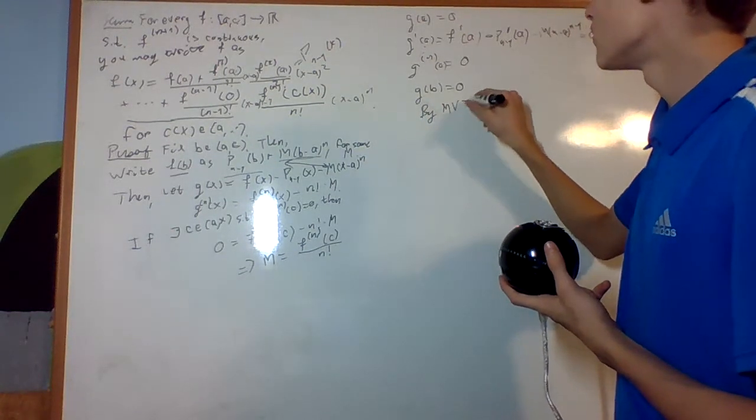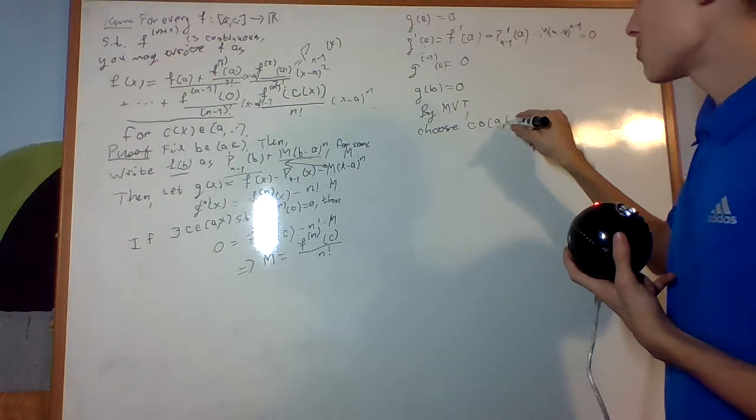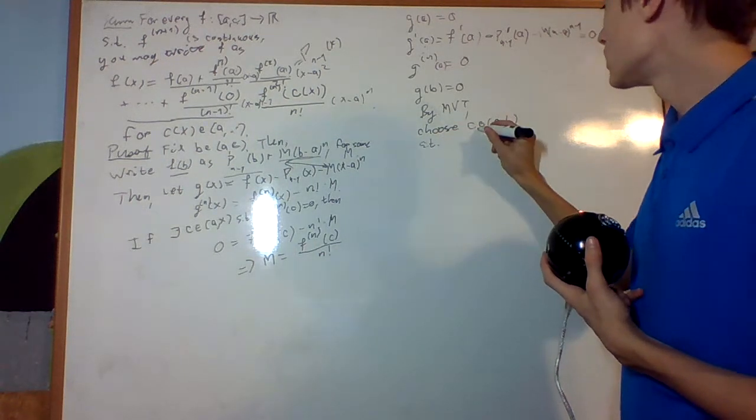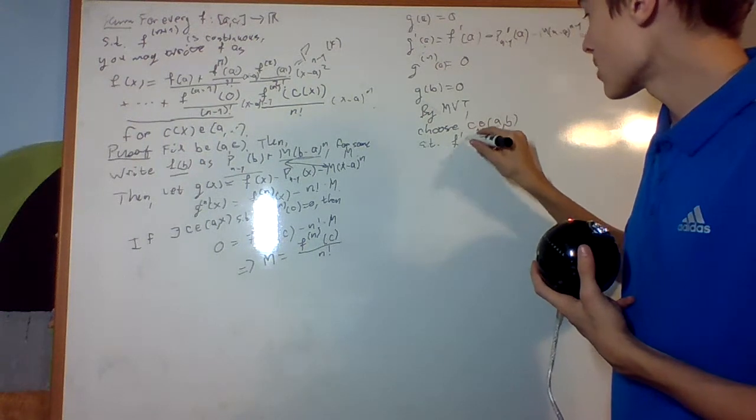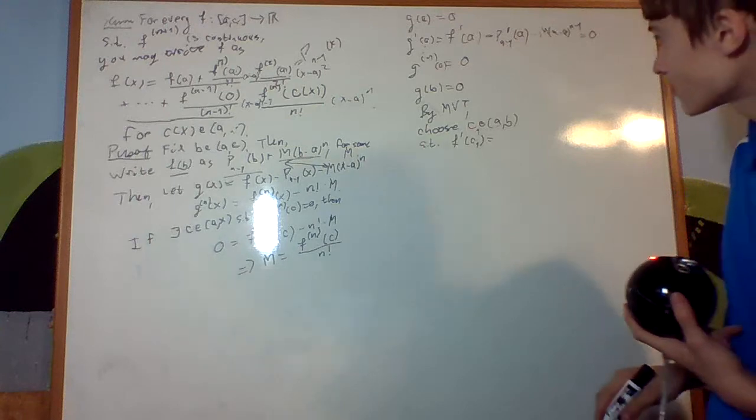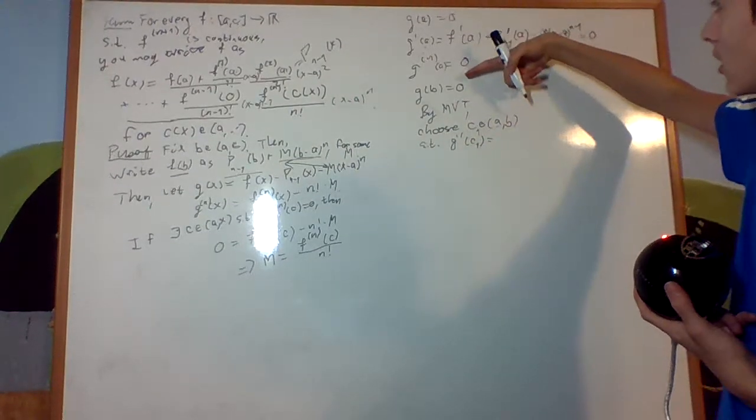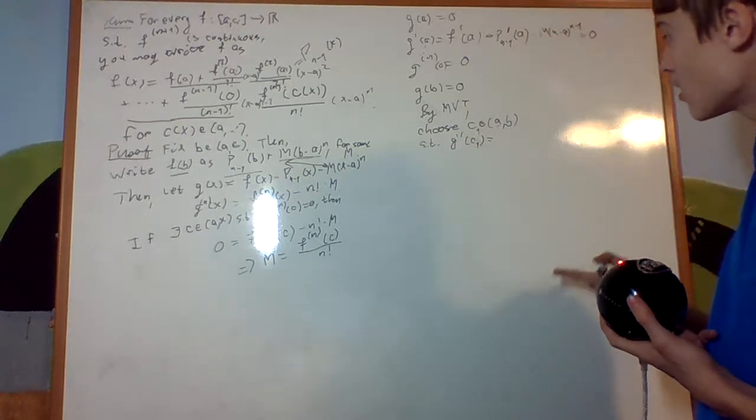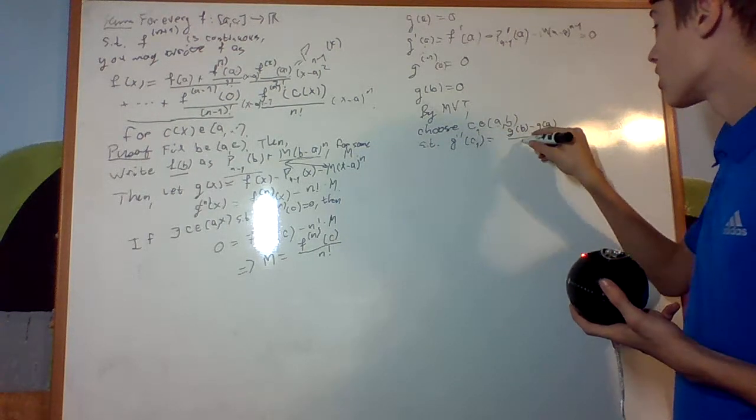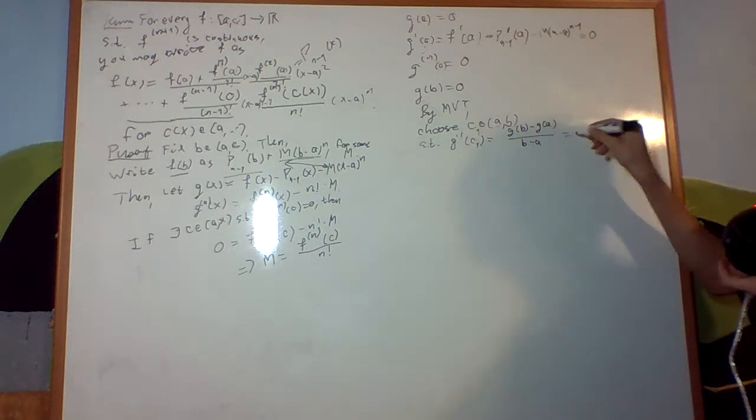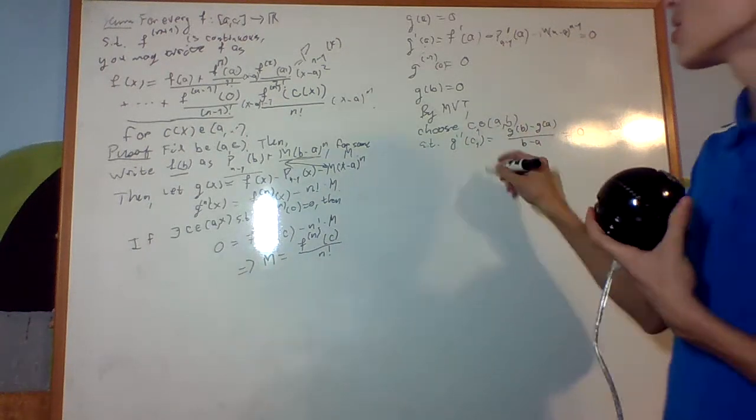by mean value theorem, choose c in the interval a to b. I'll call it c1, such that g prime of c1 is going to be g of b minus g of a over b minus a, right? We can do that by the mean value theorem, and that's just going to be 0, because those are both 0, that denominator is going to be non-zero, and we get 0. Then,